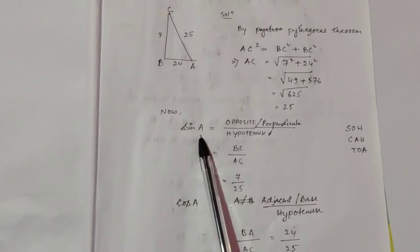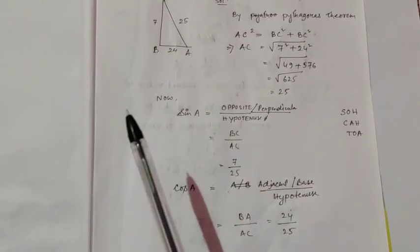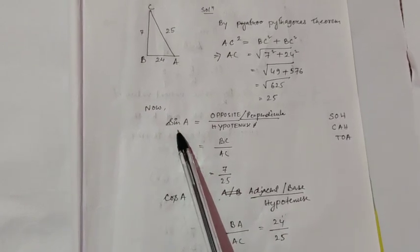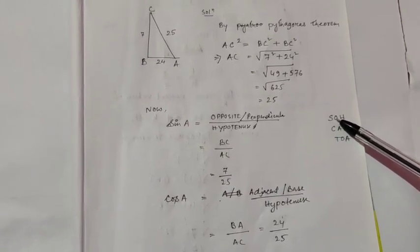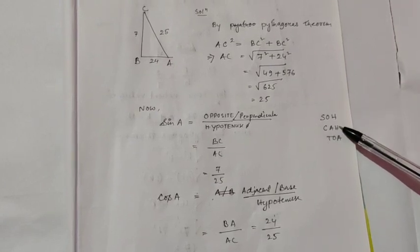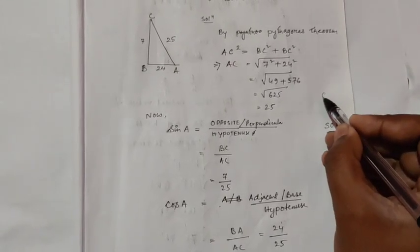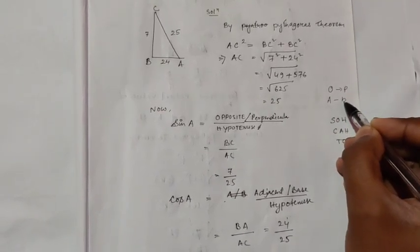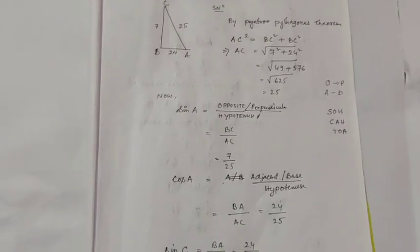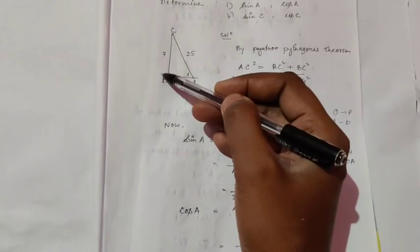Now we need to find sine A. You know the ratio of sine is perpendicular by hypotenuse, or opposite by hypotenuse. To help remember the ratios: S stands for sine, O for opposite, H for hypotenuse; C for cos, A for adjacent side (adjacent to the given angle), H for hypotenuse; T for tan, O for opposite, A for adjacent side. Also note that opposite side is also known as perpendicular and adjacent side is also known as base.